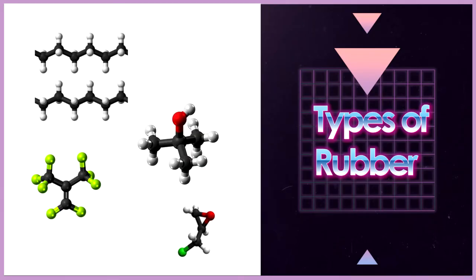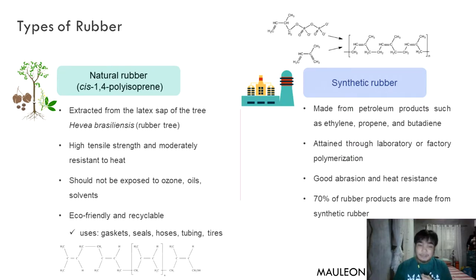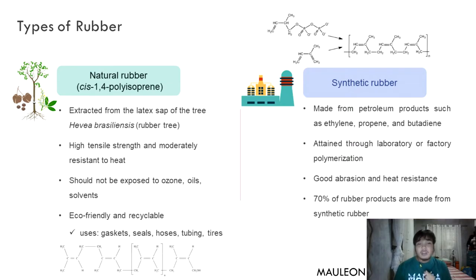There are two types of rubber: natural rubber and synthetic rubber. Natural rubber, or cis-1,4-polyisoprene, is commonly extracted from the latex sap of the tree Hevea brasiliensis, or rubber tree. It has high tensile strength and moderate resistance to heat. It should not be exposed to ozone, oils, and solvents. It is eco-friendly and recyclable, and is commonly used in gaskets, seals, hoses, tubings, and tires.